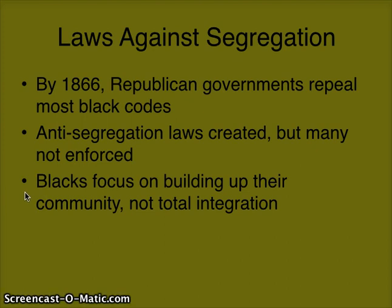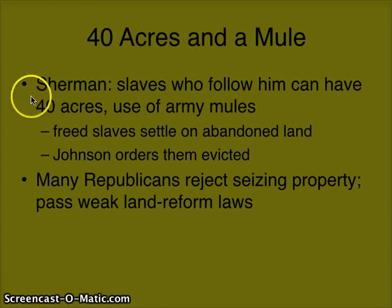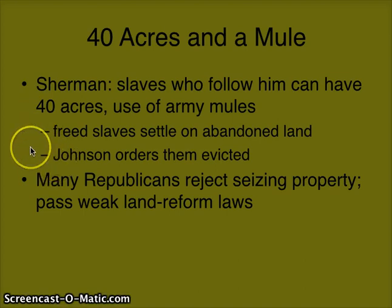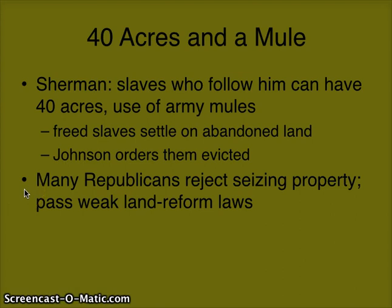During the Civil War, General Sherman promised many former slaves that if they helped with Sherman's March, they would gain land after the war. Many freed slaves settled on abandoned land that no one was using. But President Johnson eventually evicts these freed slaves off the land, saying it belongs back to the original plantation owners. Many Republicans reject this idea of seizing property from freed slaves and pass weak land reform laws.